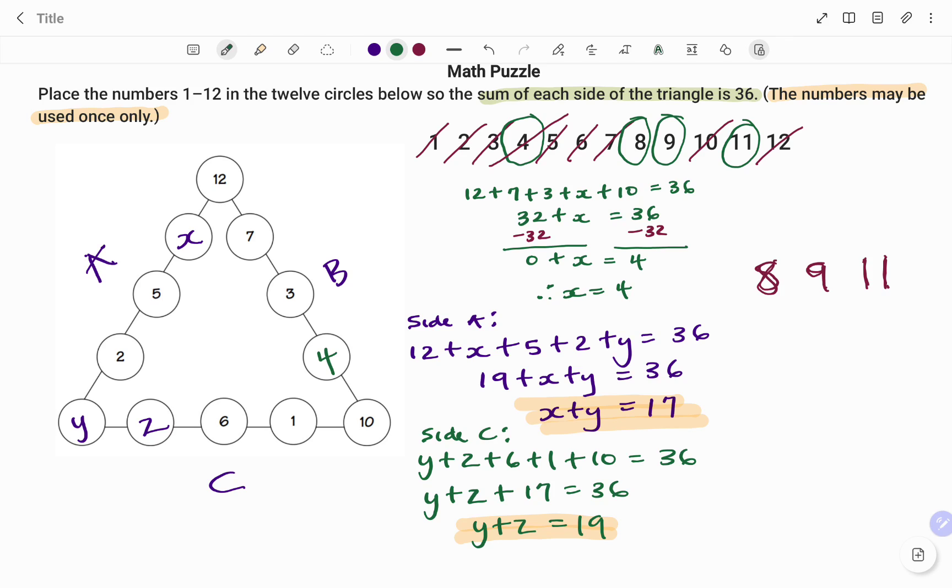So therefore, without necessarily using simultaneous equation, if you look at the combination of the numbers left, which is 8, 9, and 11, I need a common number between the two sides which is y, such that if I add y to z it will give me 19, and if I add y to x it will give me 17. So assuming my y is 11, I'm going to do a quick test. 11 plus 9 is 20, 11 plus 8 is 19. But because I have 19 here, I don't have the second number to be 20 or 17 as the case may be. So therefore my y cannot be 11.